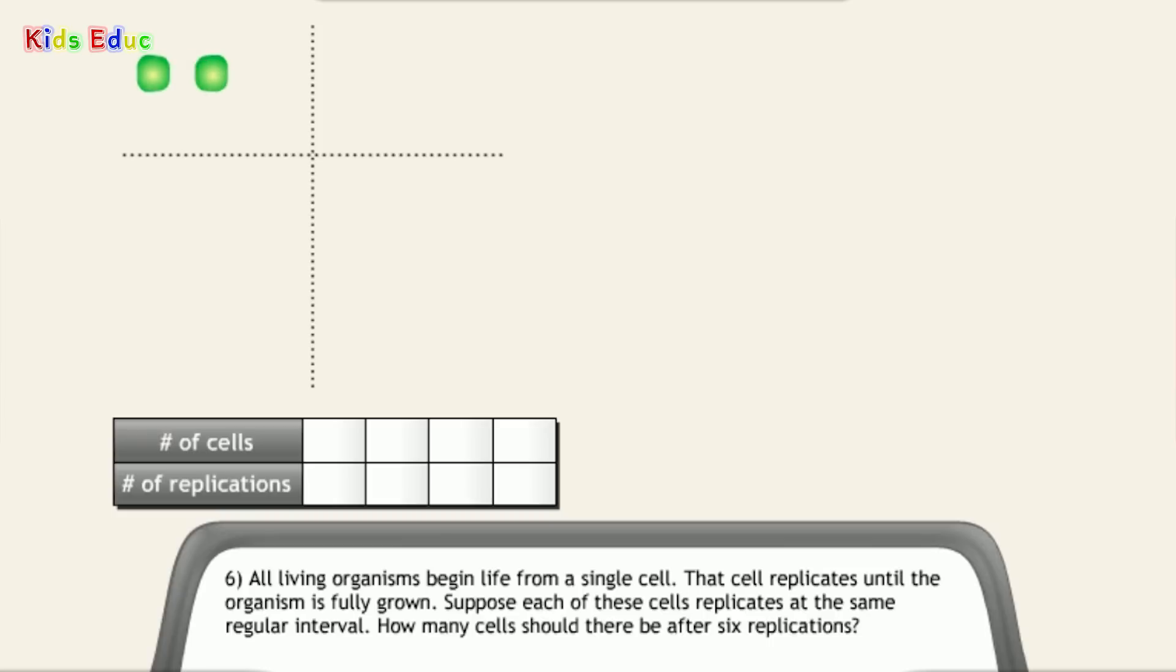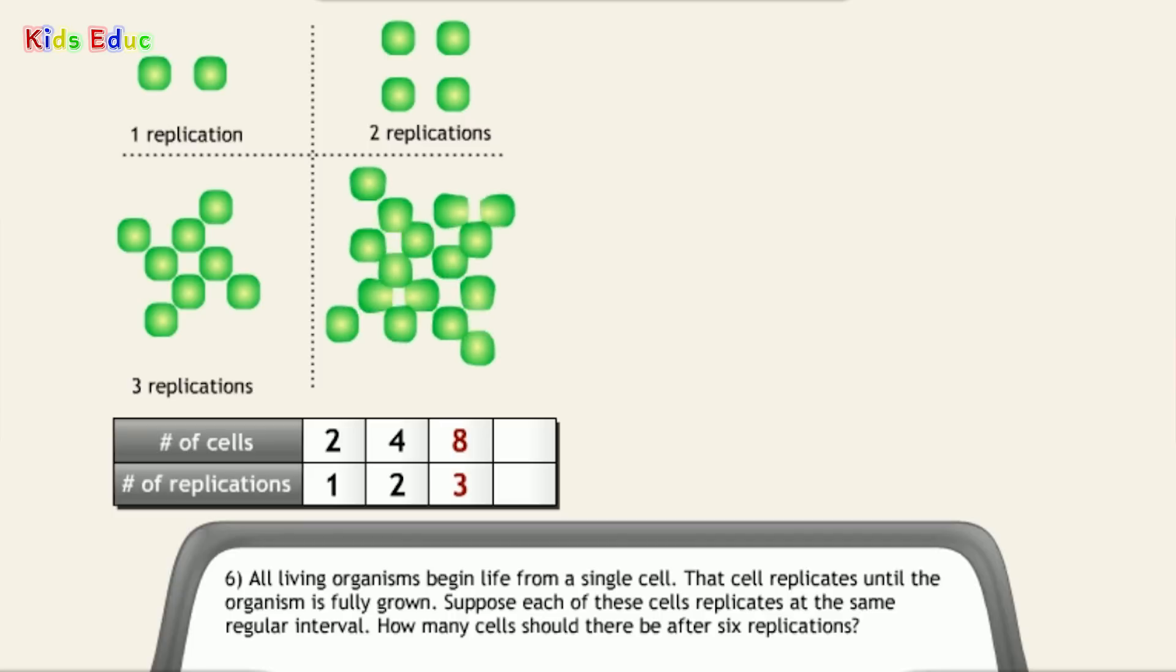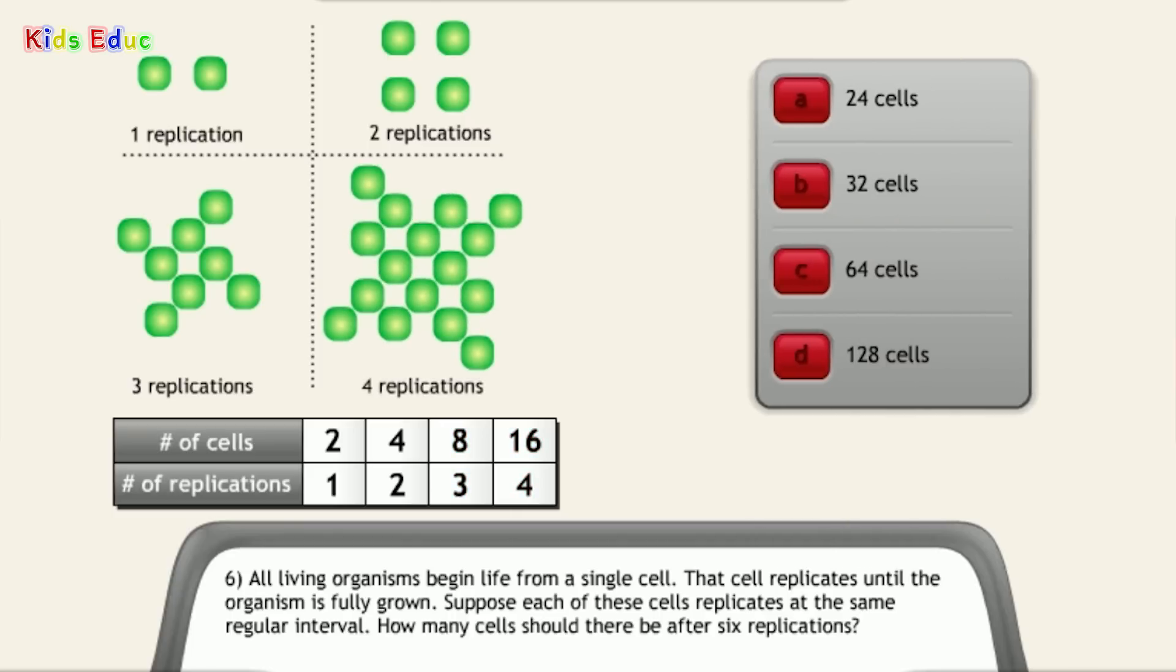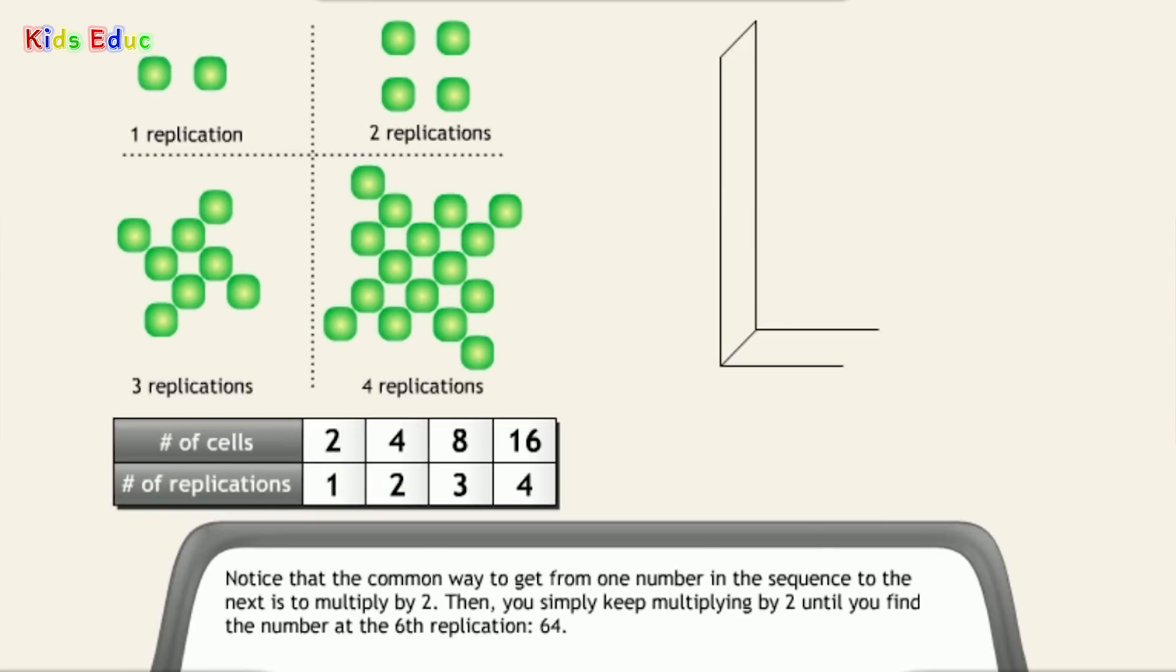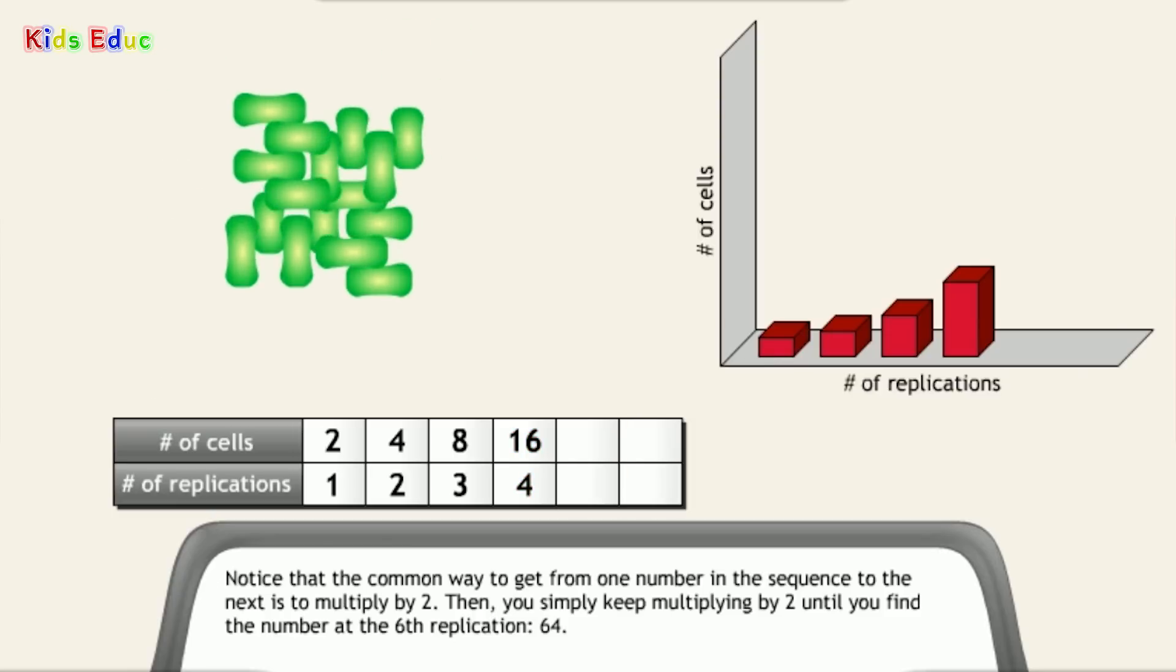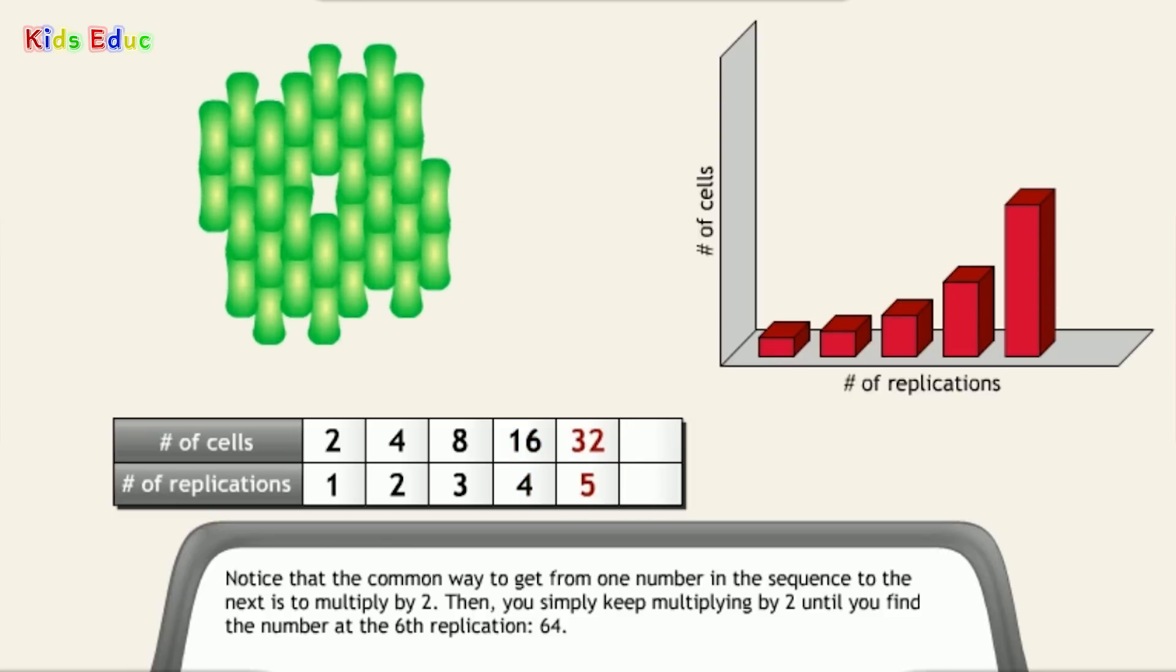Number 6. All living organisms begin life from a single cell. That cell replicates until the organism is fully grown. Suppose each of these cells replicates at the same regular interval. How many cells should there be after 6 replications? 64 cells. That's correct. Notice that the common way to get from one number in the sequence to the next is to multiply by 2. Then you simply keep multiplying by 2 until you find the number at the 6th replication, 64.